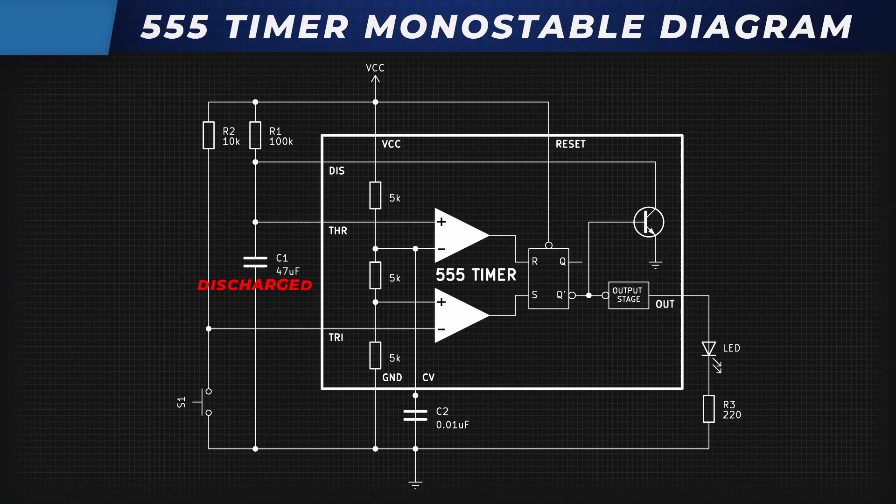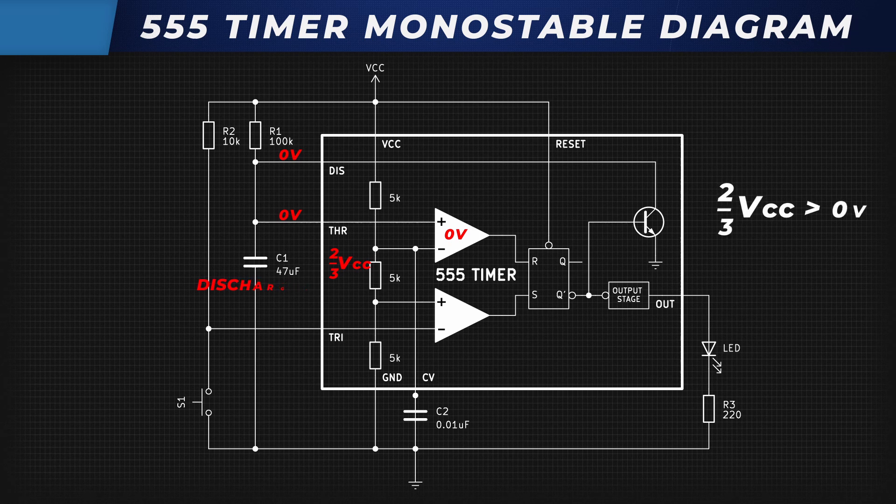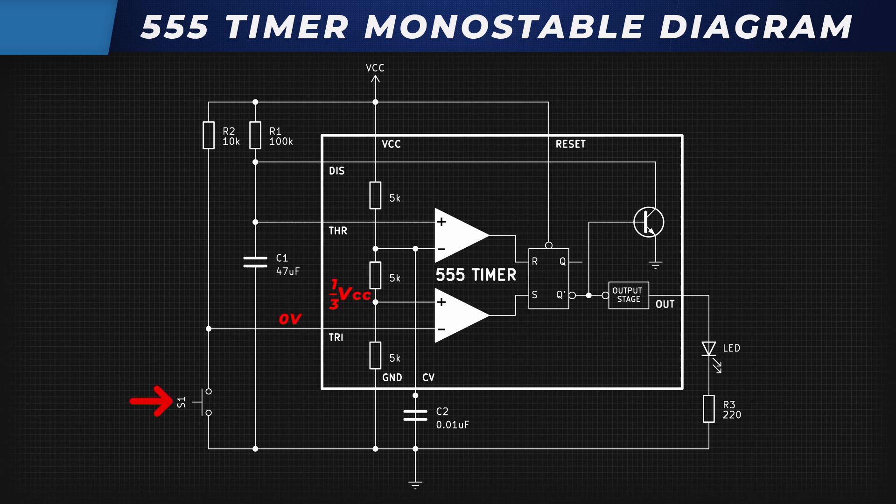Therefore, there is zero volt potential at pins 6 and 7. Pin 6 connects to the threshold comparator's positive input, which is lower than the negative one. Because of that, the output is low. But if we press the button, the trigger pulse reaches another comparator and its negative input becomes lower than positive, turning the output high.